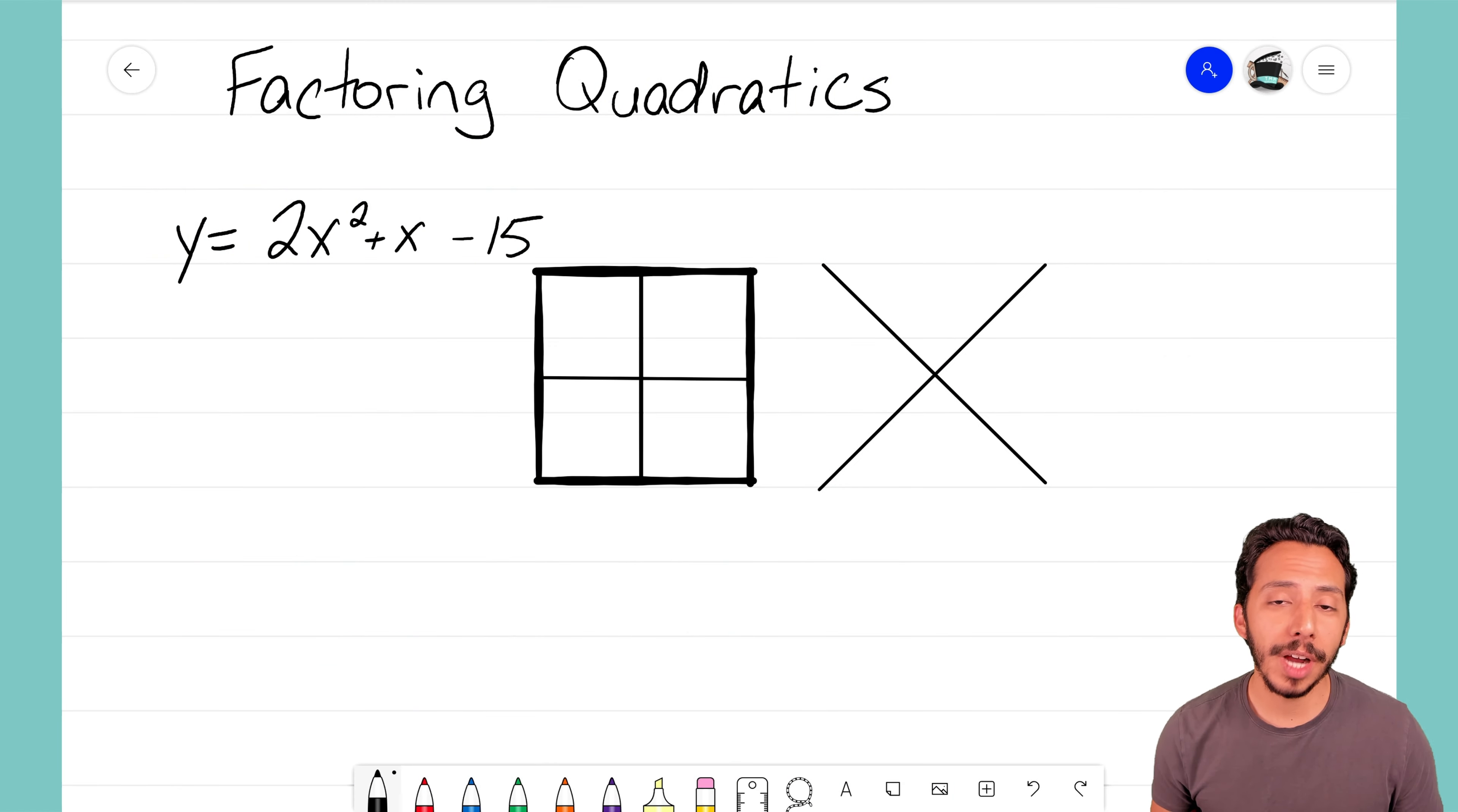Now we have our quadratic equation of y equals 2x squared plus x minus 15 and we want to factor that so that we end up with that same equation just rewritten in factored or product form. That process of changing from a sum to a product is called factoring and we're going to use the box and diamond method to help us out.